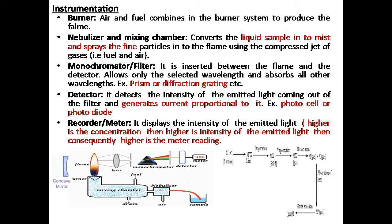Depending on the intensity of the emitted light, the detector — a photocell or photodiode — detects the intensity of the light coming out of the monochromator. It generates a current whose magnitude is directly proportional to the concentration of the solution. Higher concentration means higher current and a higher meter reading. This is the overall instrumentation of flame photometry.